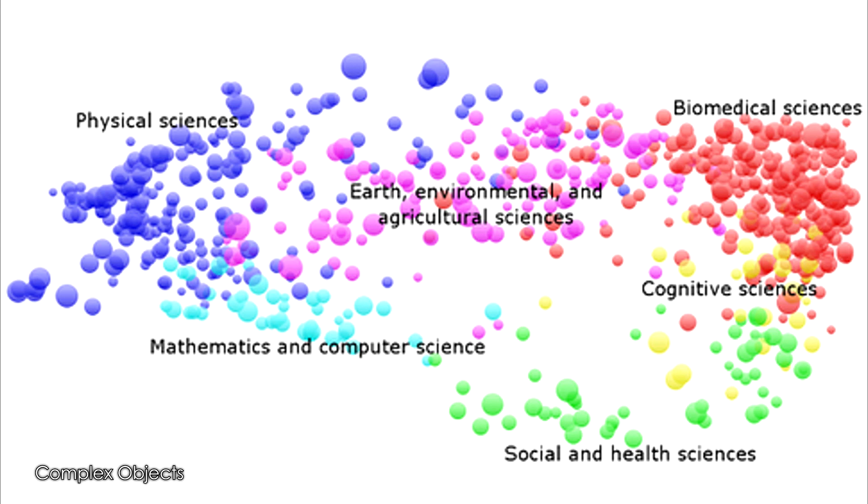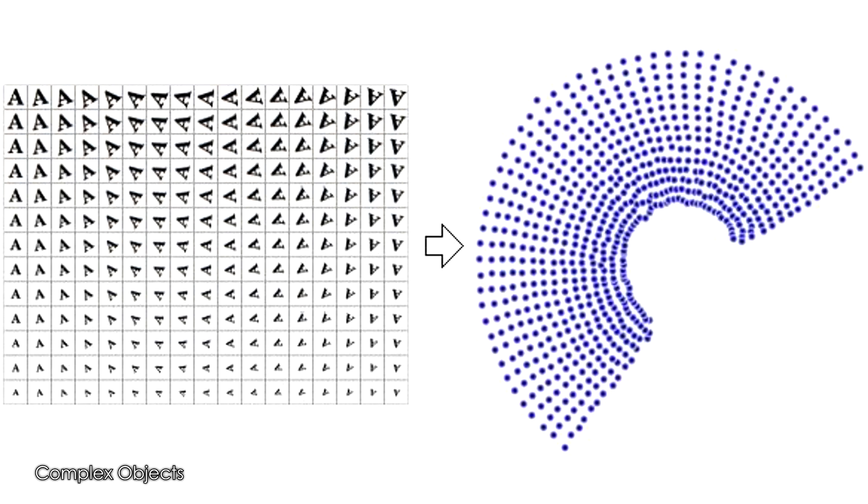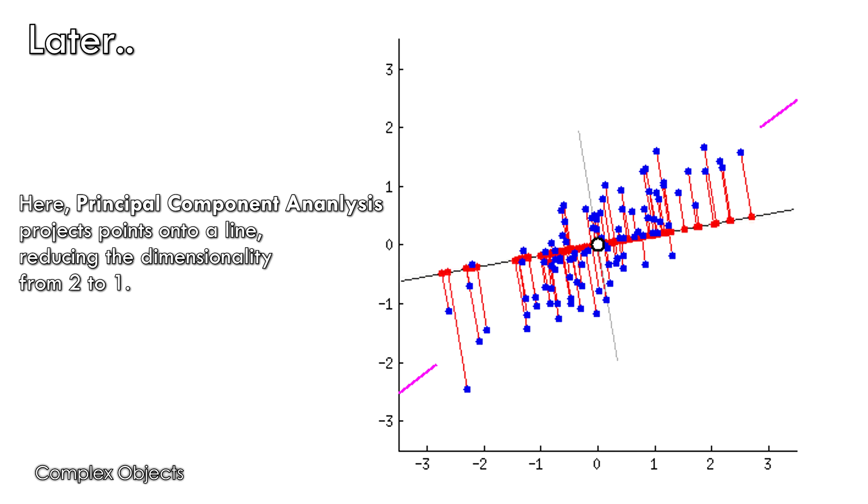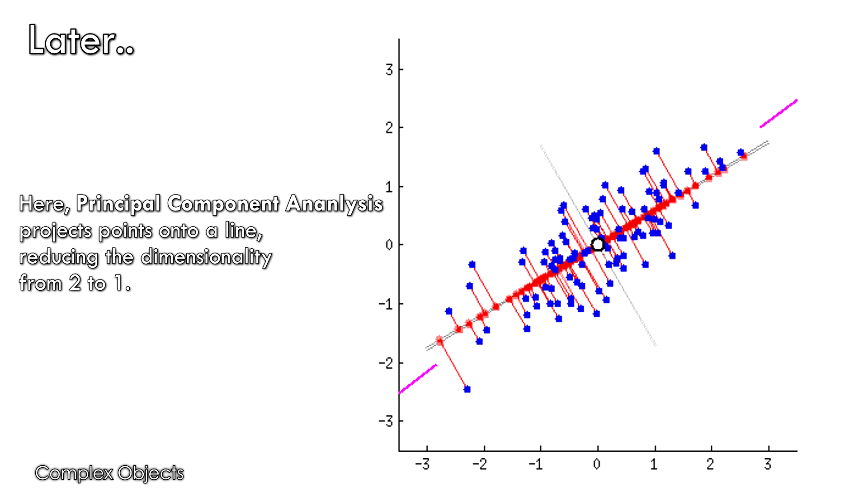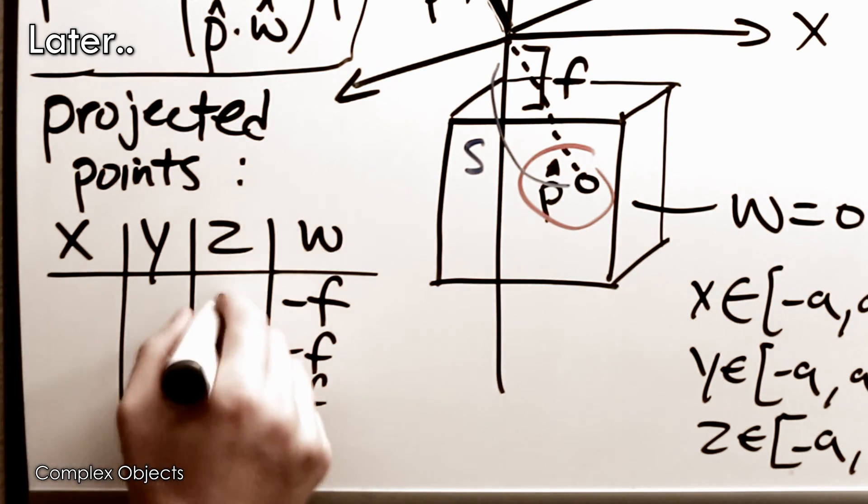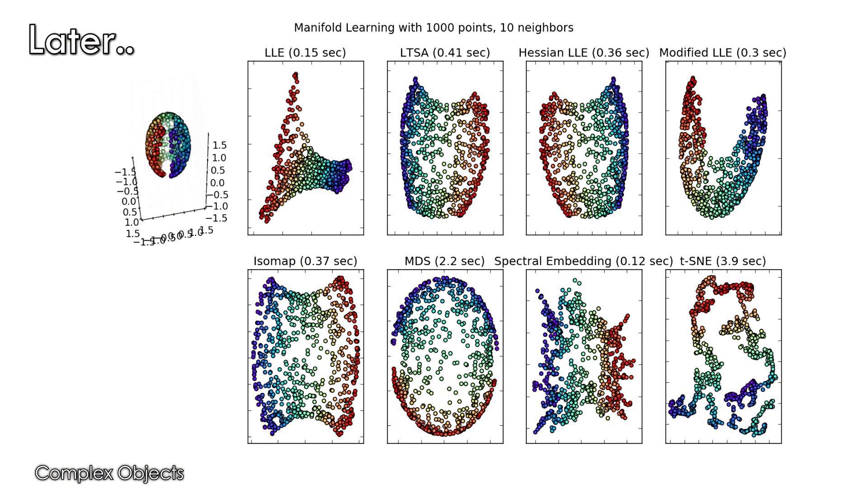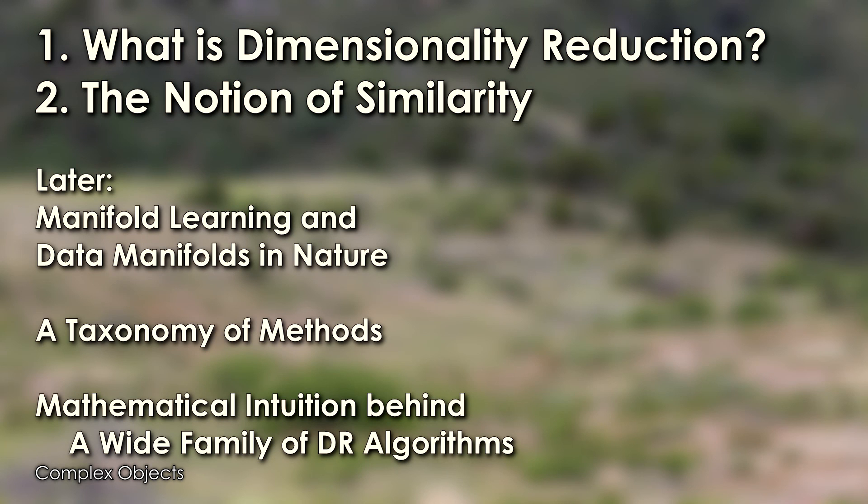So to conclude, dimensionality reduction is basically about finding a representation of your data which is able to elucidate meaningful relationships. It's about tossing out irrelevant or redundant information so you can see those relationships more clearly. And different algorithms do this in different ways. One of the main things that differentiates dimensionality reduction algorithms is how they define the similarity between two points. So next we're going to talk about different ways of defining similarity.